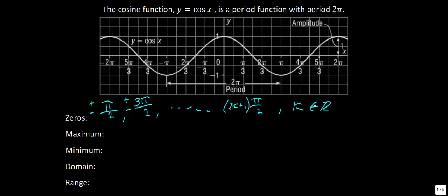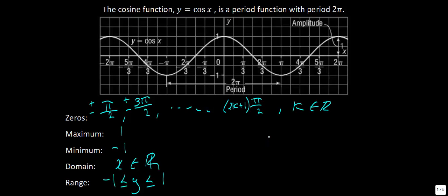For cosine, the maximum value is 1 and the minimum is −1 — no different from sine. The domain is the same as sine, and the range also goes from −1 to 1. So the only thing that really changed between sine and cosine is the zeros.